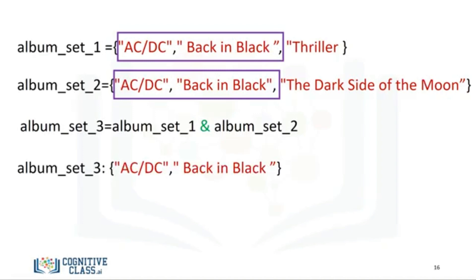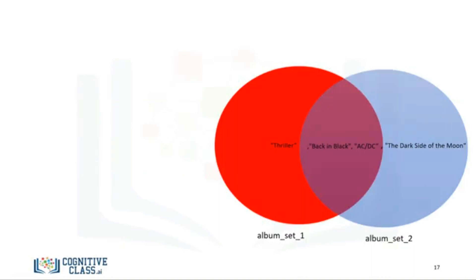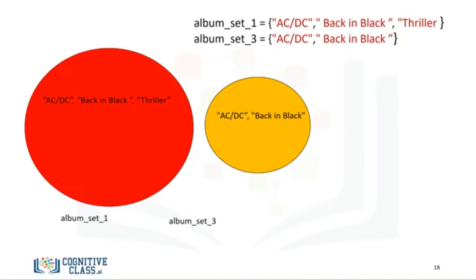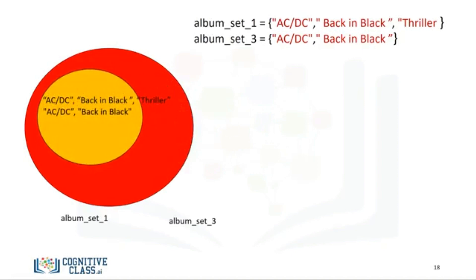The union of two sets is the new set of elements which contain all the items in both sets. We can find the union of ALBUM_SET_1 and ALBUM_SET_2. The result is a new set that has all the elements of both, represented in green. Consider the new ALBUM_SET_3. The set contains the elements ACDC and back in black. We can represent this with a Venn diagram, as all the elements in ALBUM_SET_3 are in ALBUM_SET_1. We can check if a set is a subset using the issubset method. As ALBUM_SET_3 is a subset of ALBUM_SET_1, the result is true. There is a lot more you can do with sets — check out the lab for more examples.